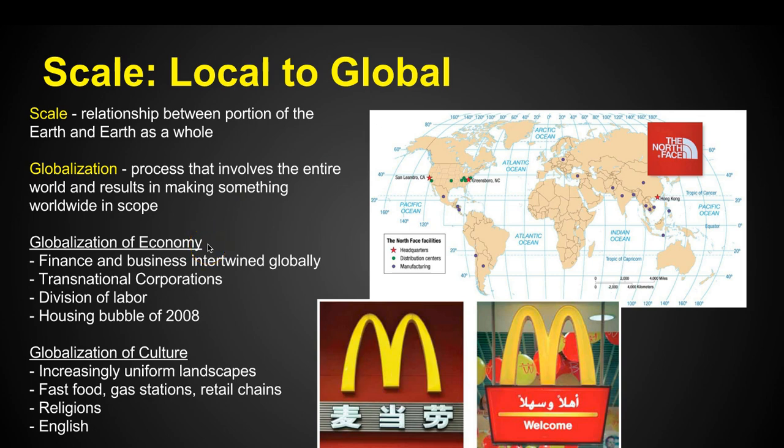Globalization occurs in the economy where finance and business are intertwined because people are doing transactions across the globe. Maybe a business is physically in the United States, but they're selling things in Europe, it's being created in Asia, and they're putting parts together in South Africa — it's a global economy. Those corporations are not just based in the United States; they now have their operations transnationally, meaning in multiple countries. This is a division of labor. At one time, a company in the United States would exist solely in our country, manufacturing all their parts, but nowadays labor is divided through multiple countries.